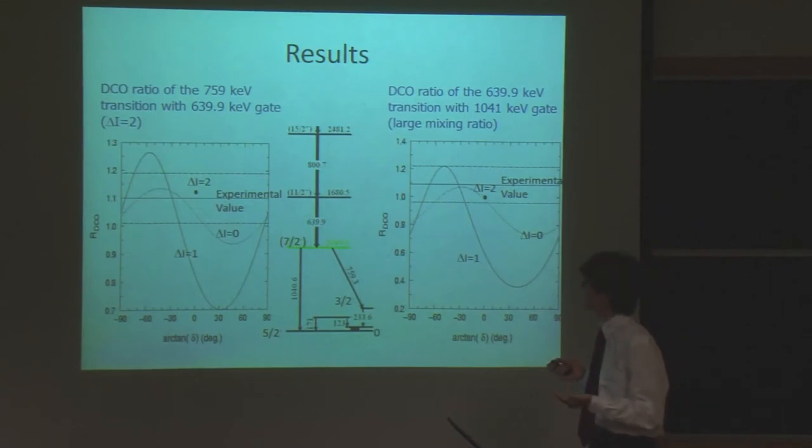So there's three possibilities. Delta I equals 2 is this dot. And delta I equals 1 or 0 has many different values because dipole radiation can have quadrupole radiation mixed in with it, what we call the mixing ratio. And so if there's quadrupole radiation mixed in with dipole, it's going to change the angle that it's most intense at, and that'll change the DCO ratio. So we display within arctangent so we can see a wider range of values.